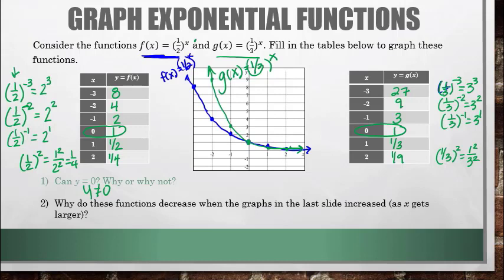Why do these functions decrease when the graphs on the last side increased? These are decreasing because as your x values get larger, the y values are actually getting smaller. The reason is that we have a decay factor — A is smaller than 1. Every time we move from one x value to the next, our graph gets smaller: 8 times 1/2 gives 4, 4 times 1/2 gives 2, 2 times 1/2 gives 1. We're multiplying by a value less than 1, which gives us a smaller value.